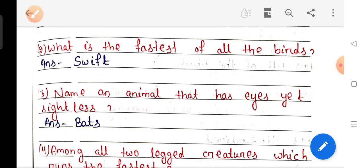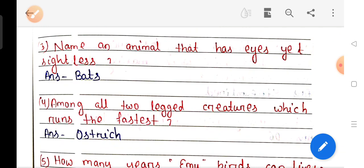Question number 3: Name an animal that has eyes yet sightless. Answer Bat. Question number 4: Among all two-legged creatures, which run fastest? Answer Ostrich.